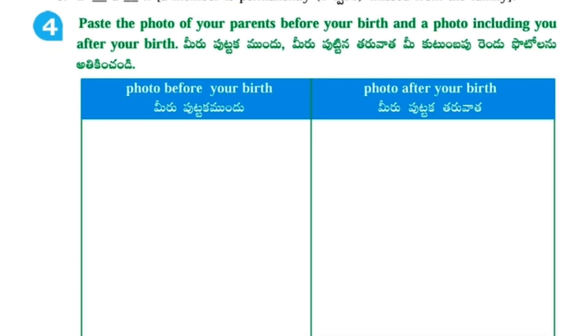Fourth one: A member is newly added to the family, i.e. bond. A member is permanently removed from the family, i.e. death.